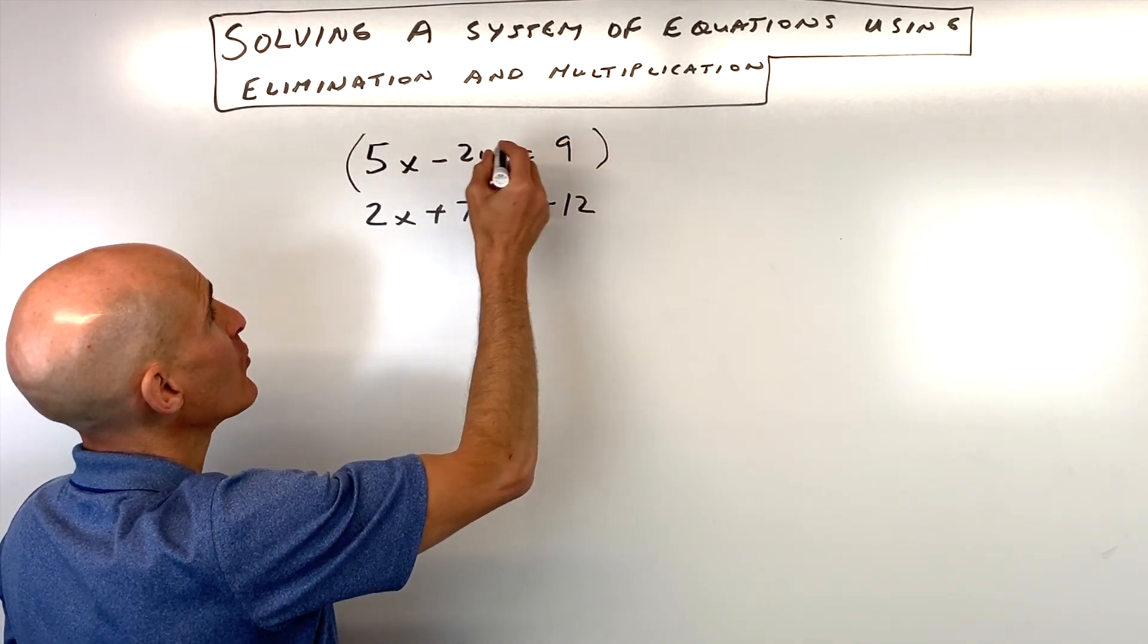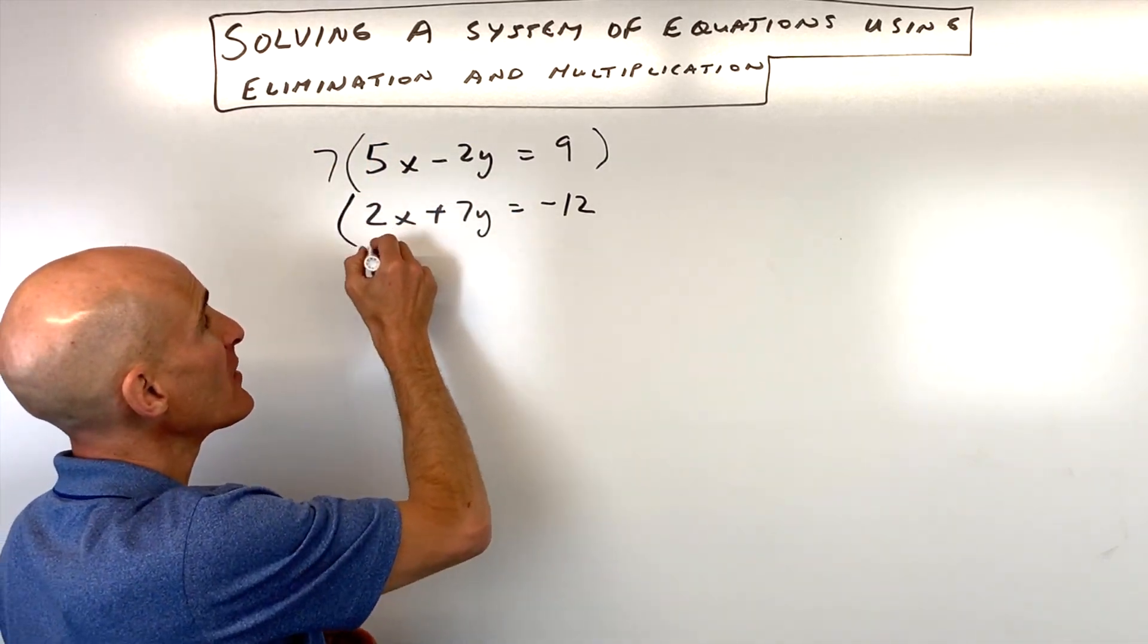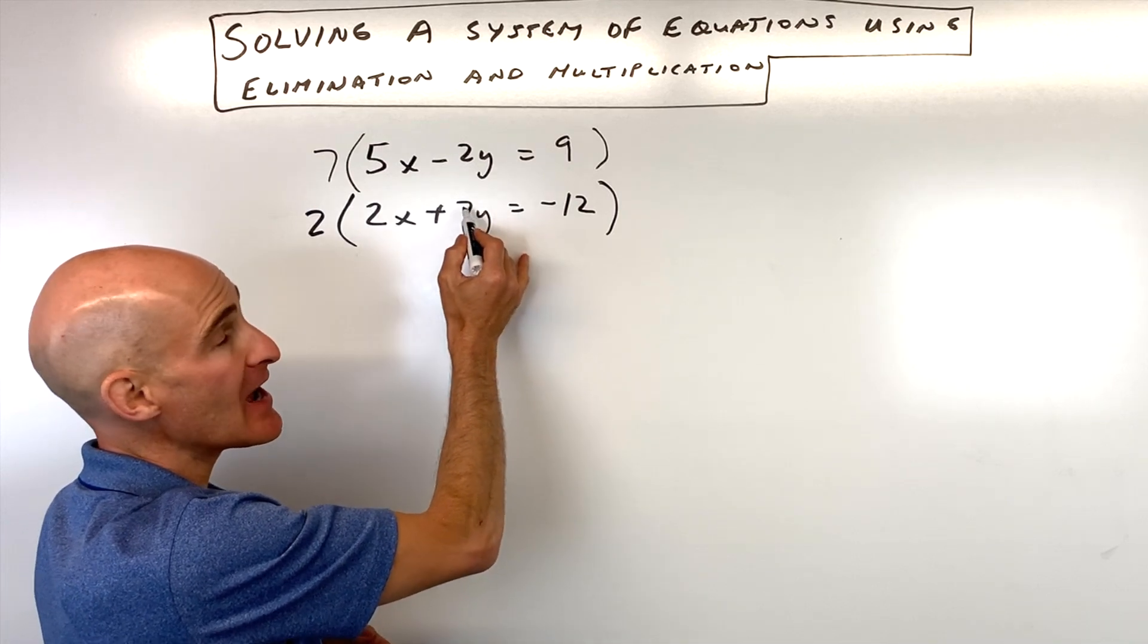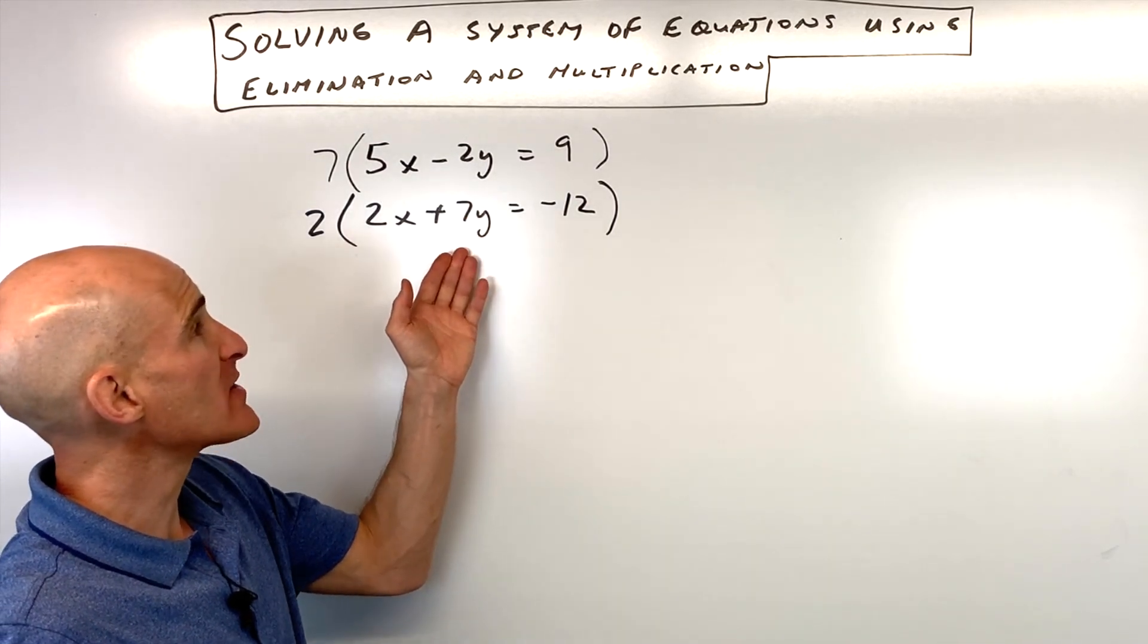So what I'm going to do is I'm going to multiply this top equation by 7. That would make this negative 14y. I'm going to multiply this bottom equation by 2. That's going to make this positive 14y. This way when we go to add the two equations together the y's are going to cancel.